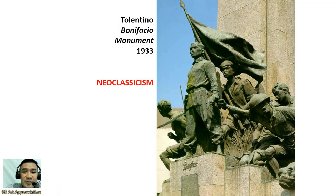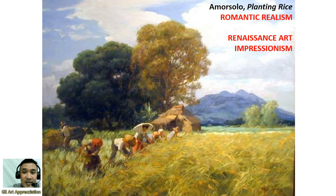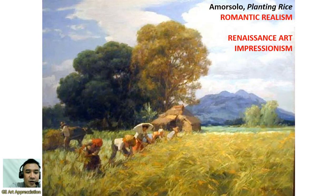We also have Tolentino, whose famous obra is the Bonifacio Monument in 1933. The style of his art is Neoclassicism. We also have Fernando Amorsolo, whose style is romantic realism, Renaissance art, and Impressionism. His painting is entitled Planting Rice, showing the romanticism of Filipinos through the act of planting.